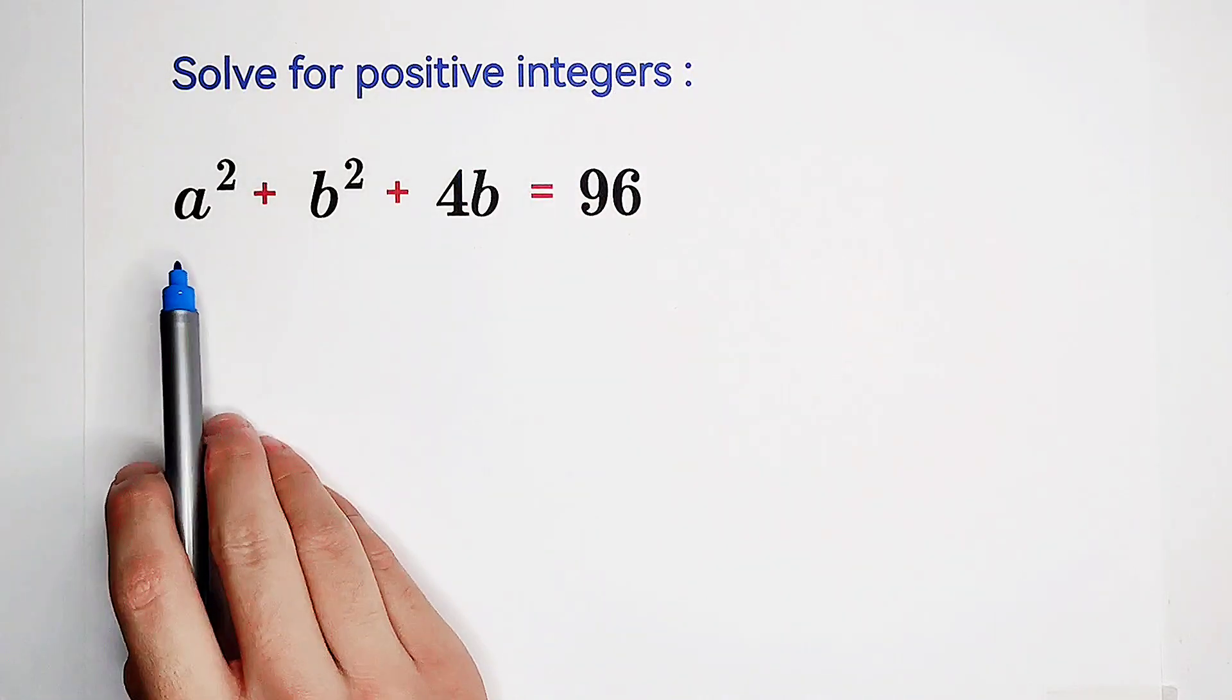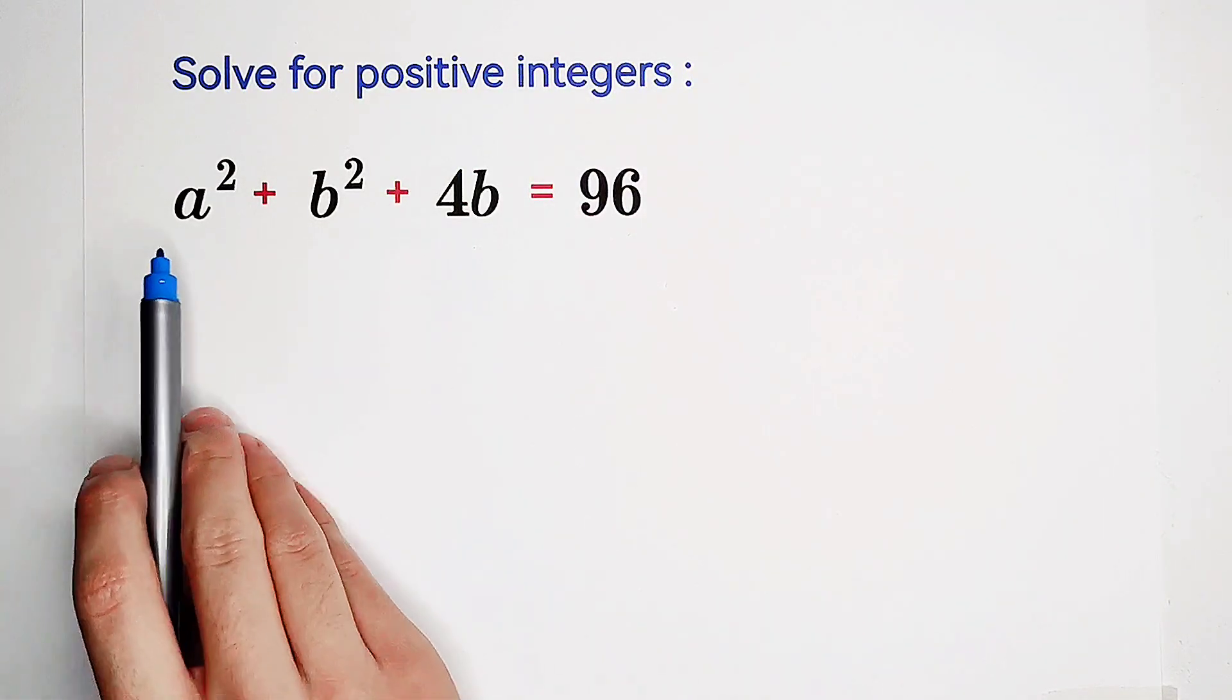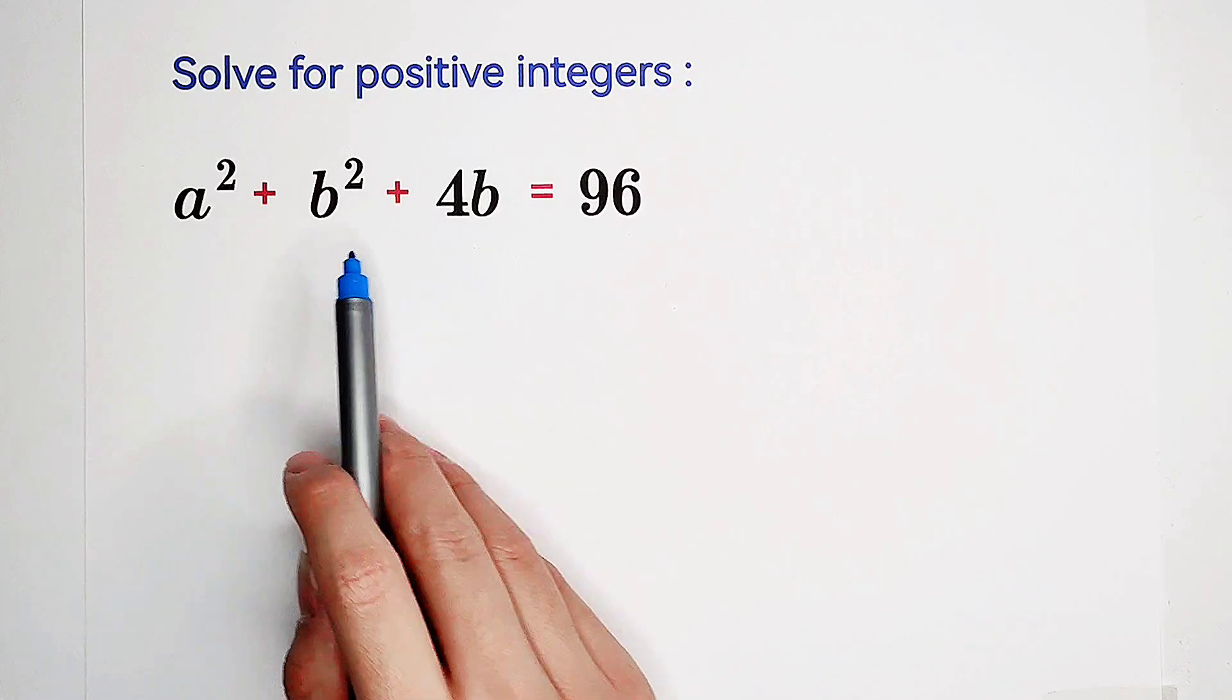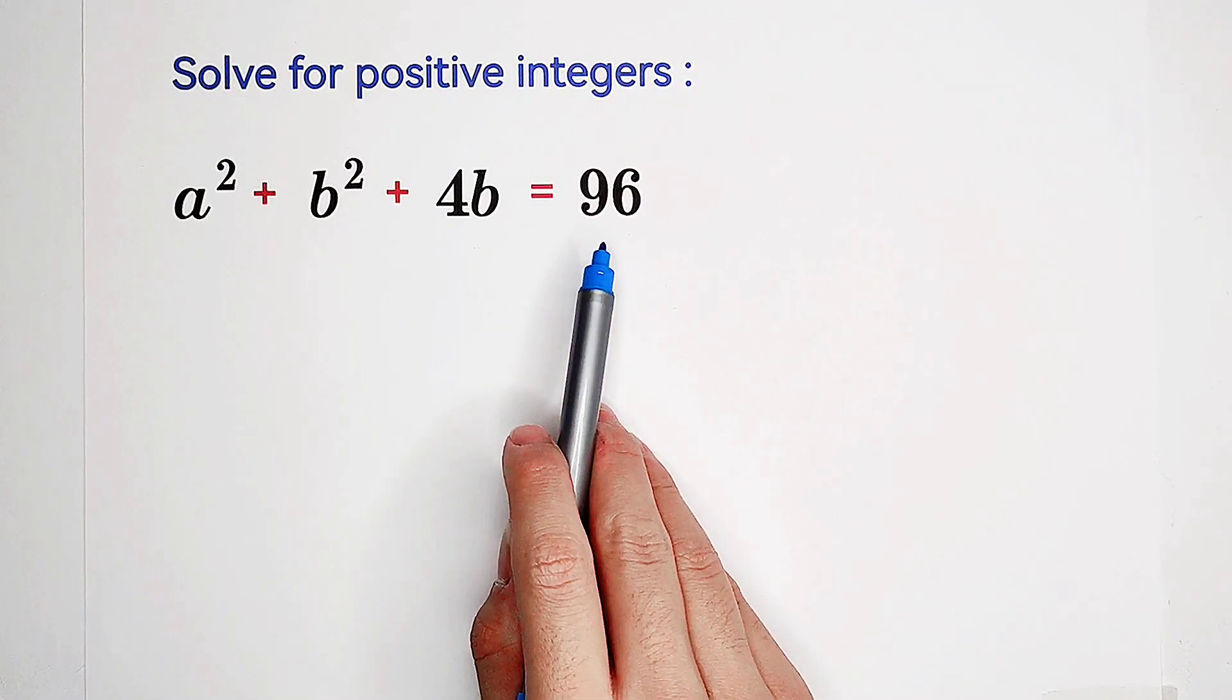Solve for positive integers a and b, such that a squared plus b squared plus 4b equals 96.